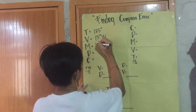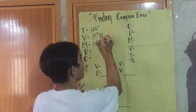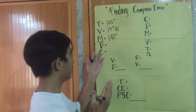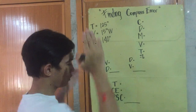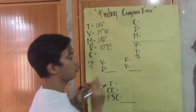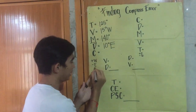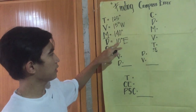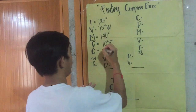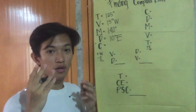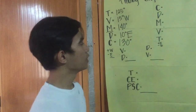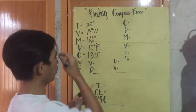140 degrees magnetic. And if we have a deviation of 10 degrees easterly, we know that if we're going east we're going to subtract the magnetic and that deviation, so we'll have a ship's compass of 130 degrees.